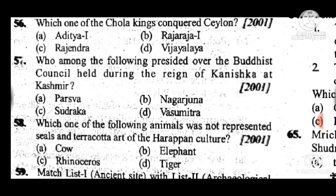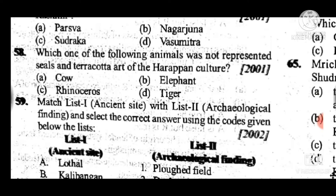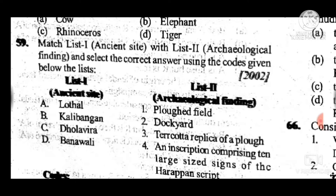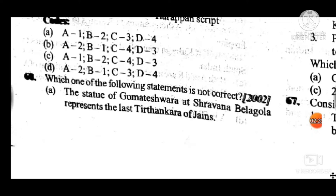Question 59 is a match-list question matching ancient sites with archaeological findings. Answer is B: A — Lothal belongs to dockyard; B — Kalibangan, first ploughed field; C — Dholavira, an inscription comprising ten large-sized signs of the Harappan script; D — Banawali, terracotta replica of a plough.